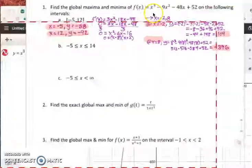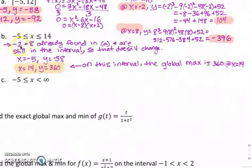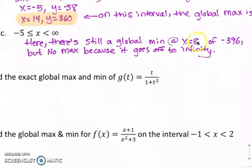Go ahead and try the next two problems on your own — it's the same exact process. In part b, we already found the critical values negative 2 and 8, which are still in the interval, so that doesn't change and their y values wouldn't change. And negative 5 is still one of the endpoints, but 14 has changed. If you plug 14 into the original function, you get y equals 360, which is significantly higher than 104, which was our original global max. So on this interval the global max is 360 at x equals 14 and the global minimum is still at x equals 8. And for part c, there's still a global min at x equals 8 of negative 396, but there's no max because the right hand side goes off to positive infinity.